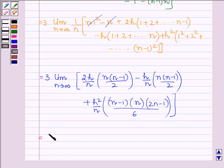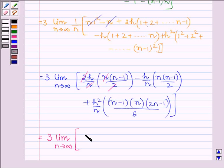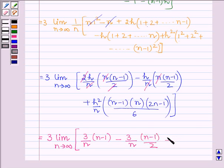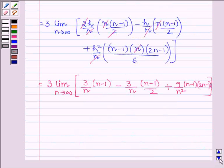This is further equal to 3 times the limit as n→∞, with the 2 canceling and n canceling with n, and substituting h = 3/n. We get 3(n-1)/n, then minus (3/n)(n-1)/2, plus canceling n with n and h² = 9/n², giving 9(n-1)(2n-1) divided by 6.